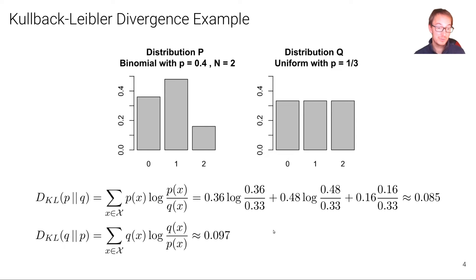But if we now swap the two, we compute the KL divergence between Q and P instead of the KL divergence between P and Q, we obtain a value of 0.097. So we can see that the KL divergence is not symmetric.